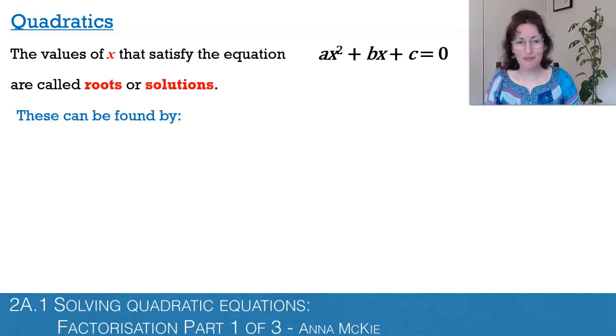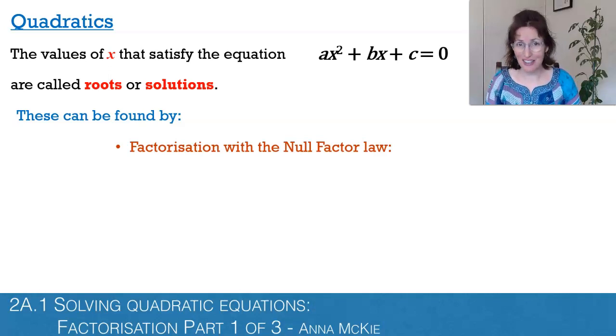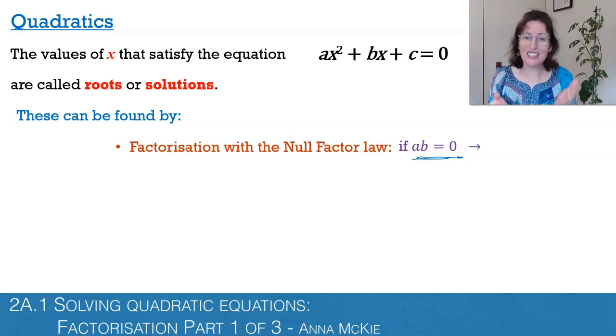So how do we find these? Some traditional methods are using the null factor law. For this video I'm assuming you've already done a bit of factorizing and solving. That law is this: if you have two numbers multiplied together and give you zero, what could those numbers be? For example, if a and b were 3 and 4, that multiplies to give 12, so that can't give zero. One of them at least has to be zero because any number multiplied by zero gives zero. So you could have zero and 4 or 3 and zero. That's how the null factor law works: a equals zero or b equals zero.